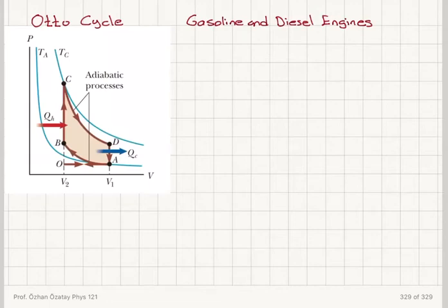Now we're going to talk about the engine in your car. It's either a gasoline or diesel engine. As you know, all real processes are irreversible, so we have an idealized version of this process called the Otto cycle. This is the reversible version, which is going to give us the theoretically maximum efficiency of these engines.